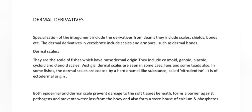Dermal derivatives are specializations of the integument from the dermis. They include scales, shields, bones etc. The dermal derivatives in vertebrates include scales and armors such as dermal bones. Dermal scales are the scales of fishes which have mesodermal origin; they include cosmoid, ganoid, placoid, cycloid and ctenoid scales. Vestigial dermal scales are seen in some caecilians and some toads. In some fishes, the dermal scales are coated by a hard enamel-like substance called vitrodentine, which is of ectodermal origin. Both epidermal and dermal scales prevent damage to soft tissues beneath, form a barrier against pathogens, prevent water loss from the body, and also form a storehouse of calcium and phosphates.